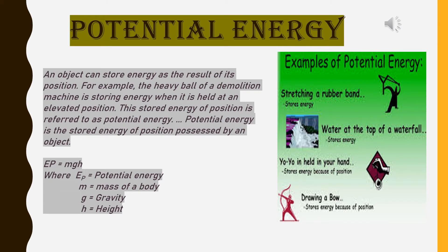Potential energy. An object can store energy as the result of its position. For example, the heavy ball of a demolition machine is storing energy when it is held at an elevated position. This stored energy of position is referred to as potential energy. Potential energy is the stored energy of position possessed by an object.